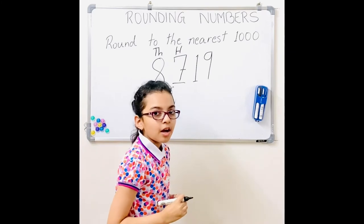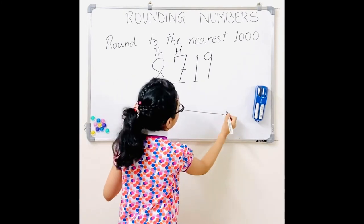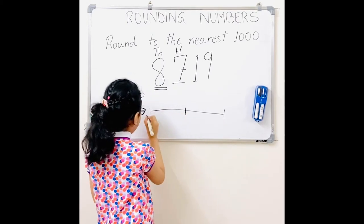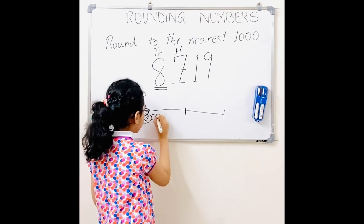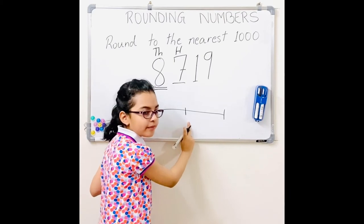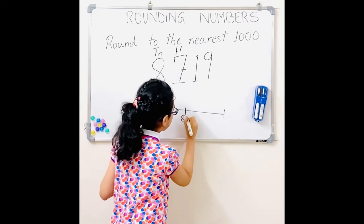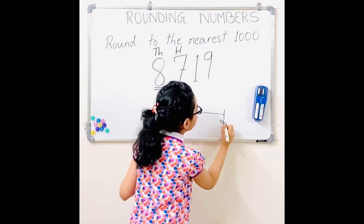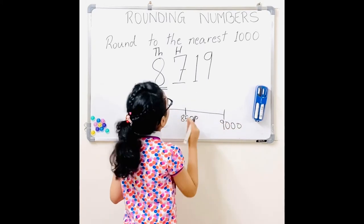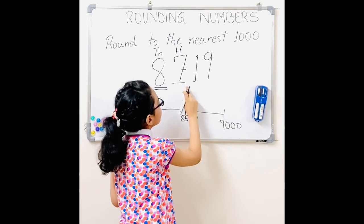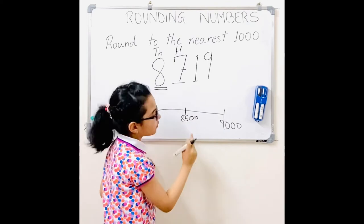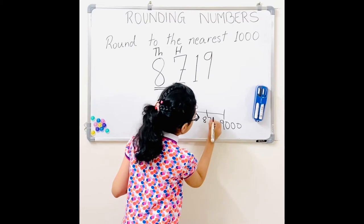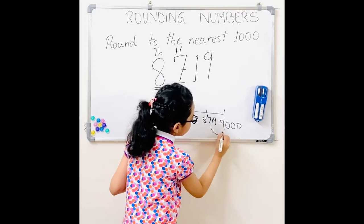First, let's see it on the number line. I'll draw my line. So at the back there will be 8,000, in the middle there would be 8,500, and here there would be 9,000. And 8,719 is more than 8,500, so it would round to 9,000.